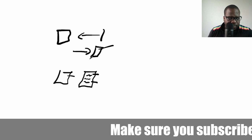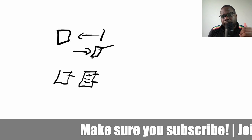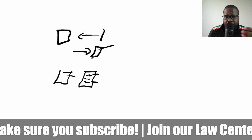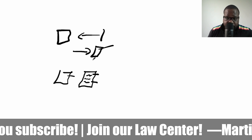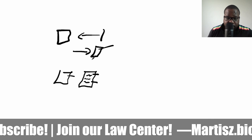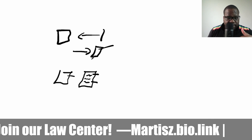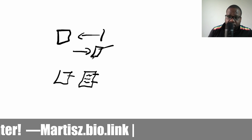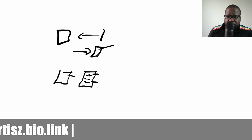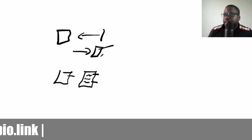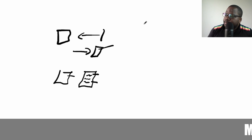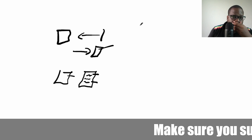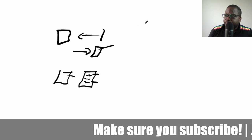Both parties need to deliver. That means if you bought something, you pay for it and you need to get the product or service. If you placed an order and did not pay yet, or you paid a down payment, you need to get the product or service and then pay the other half. You need to deliver your part of the agreement.